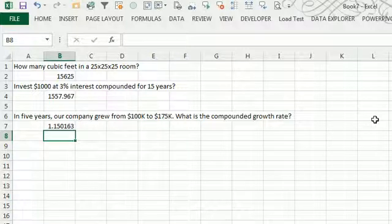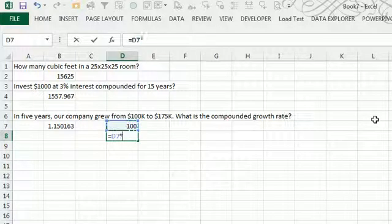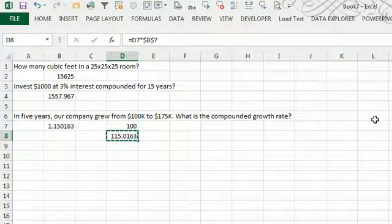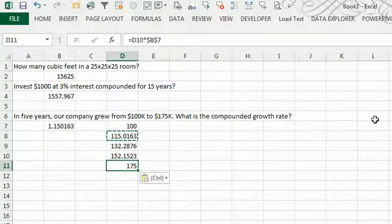And we get our 15%. Let's just test it out. So here's 100,000 equal to 100,000 times that calculated growth rate, F4, that's in year 2, year 3, year 4, year 5, there's 175, worked out.